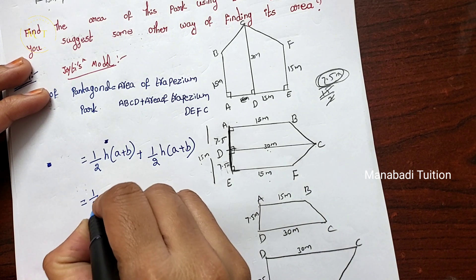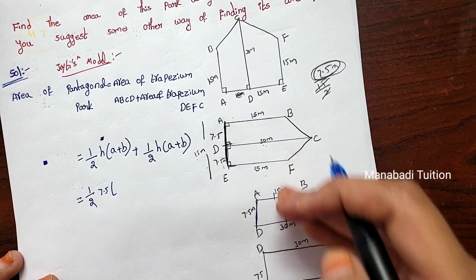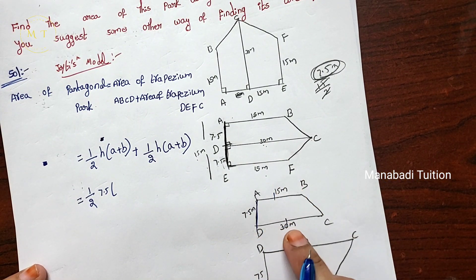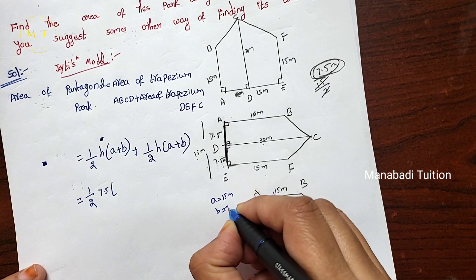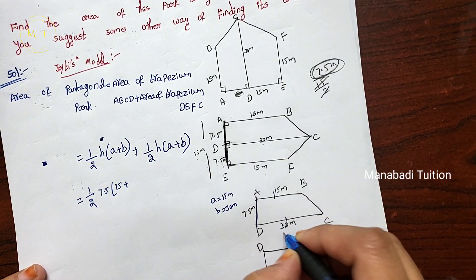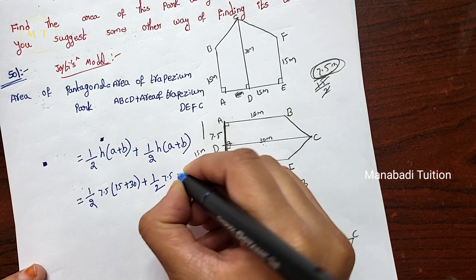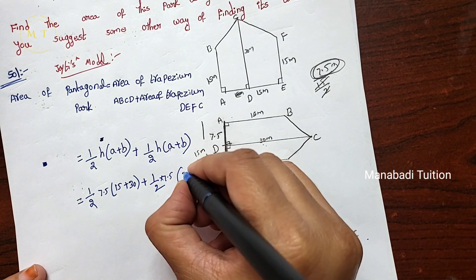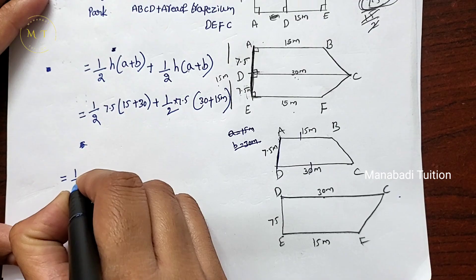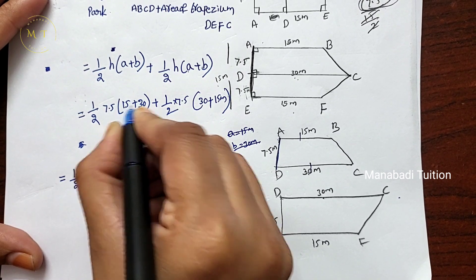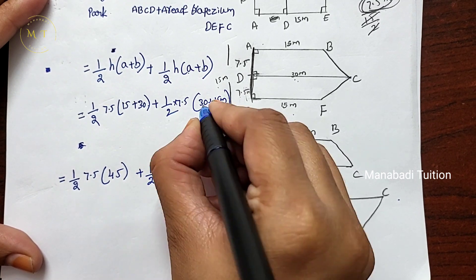For the first trapezium, H value is 7.5. A value: the upside and downside are the two parallel lines. A is 15 meters and B is 30 meters. So 15 plus 30. For the second trapezium, H value is the same: 7.5, and A is 30 meters plus B is 15 meters. So: ½ × 7.5 × 45 plus ½ × 7.5 × 45.